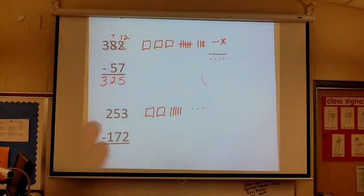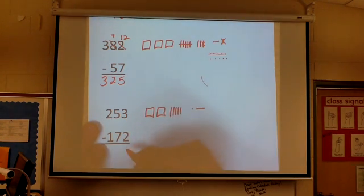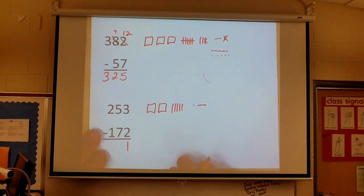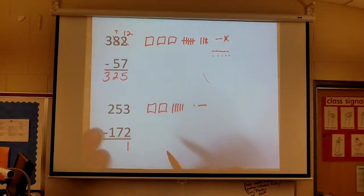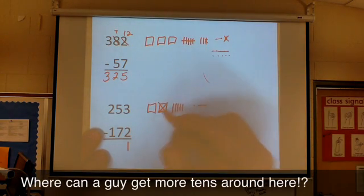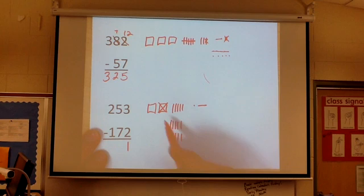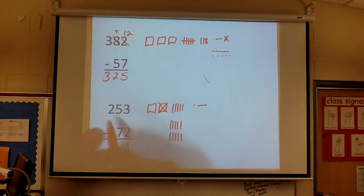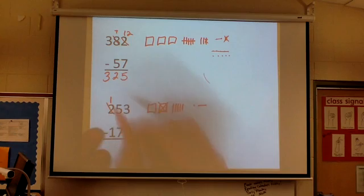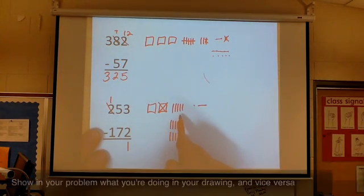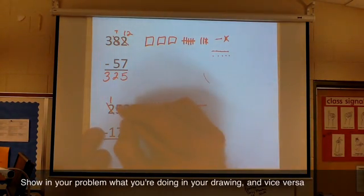Again, you're only going to ungroup if you have to. 3 ones minus 2 ones, that's 1 one left over. 5 tens minus 7 tens. Man, I can't cross off 7 tens here, so I have to trade in one of these hundreds. Each 100 is made up of 10 tens, so now I don't have 2 hundreds, I only have 100. I used to have 5 tens, but you can see now that I've got 15 of them.